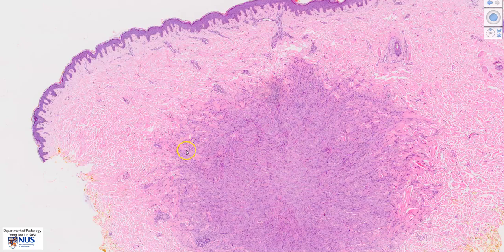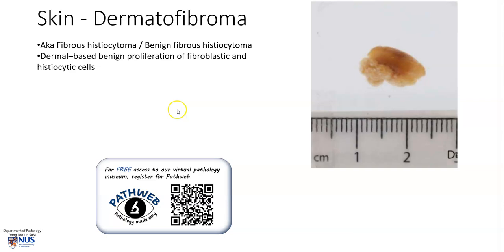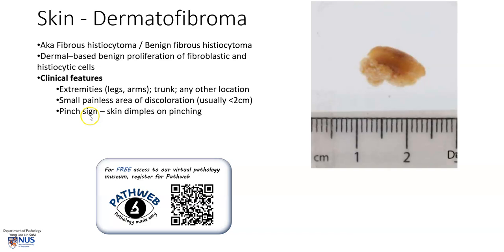Dermatofibromas are also known as fibrous histiocytoma or benign fibrous histiocytoma, and they are benign dermal-based proliferations of fibroblastic and histiocytic cells. Clinically, they usually occur in the extremities or the trunk, but most frequently in the extremities, especially in the lower limbs.